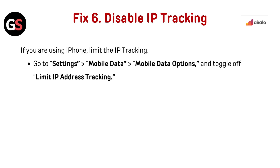Fix 6: Disable IP tracking. If you are using iPhone, limit the IP tracking. Go to Settings, then Mobile Data, then go to Mobile Data Options and toggle off Limit IP Address Tracking.